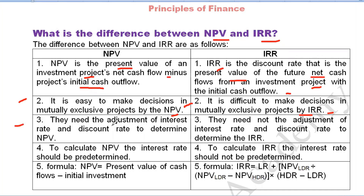They need the adjustment of interest rate and discount rate to determine NPV. But IRR requires that they need not adjust the interest rate and discount rate to determine the IRR. The NPV means that the interest rate is connected to the interest rate and discount rate.